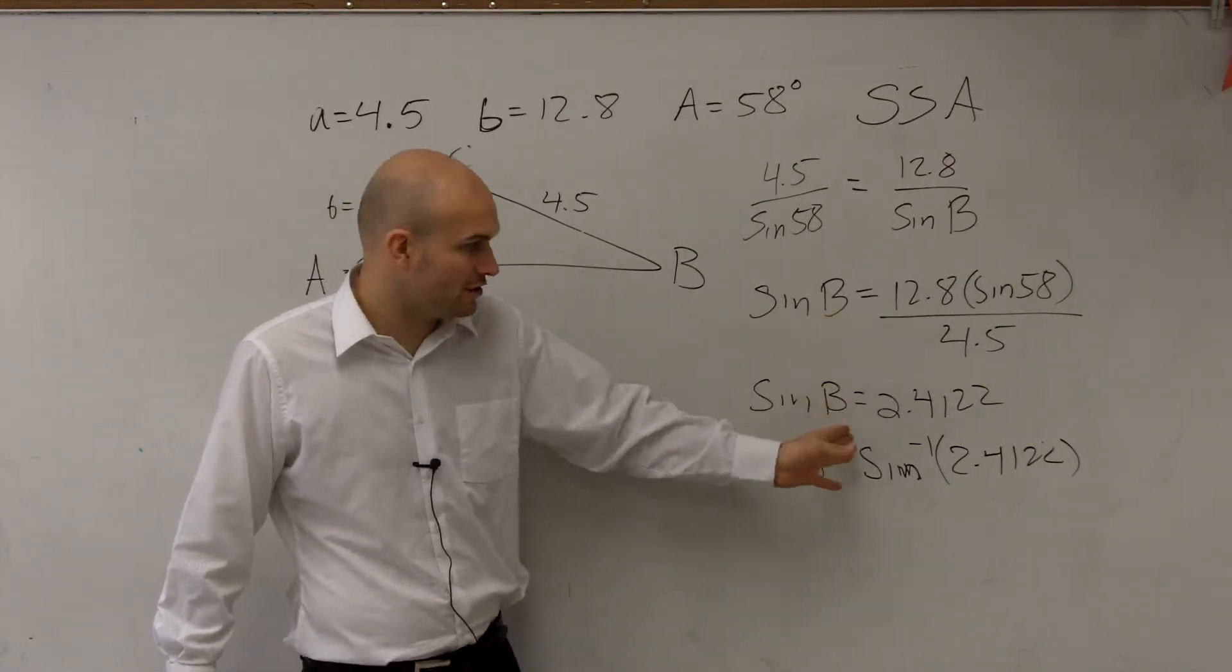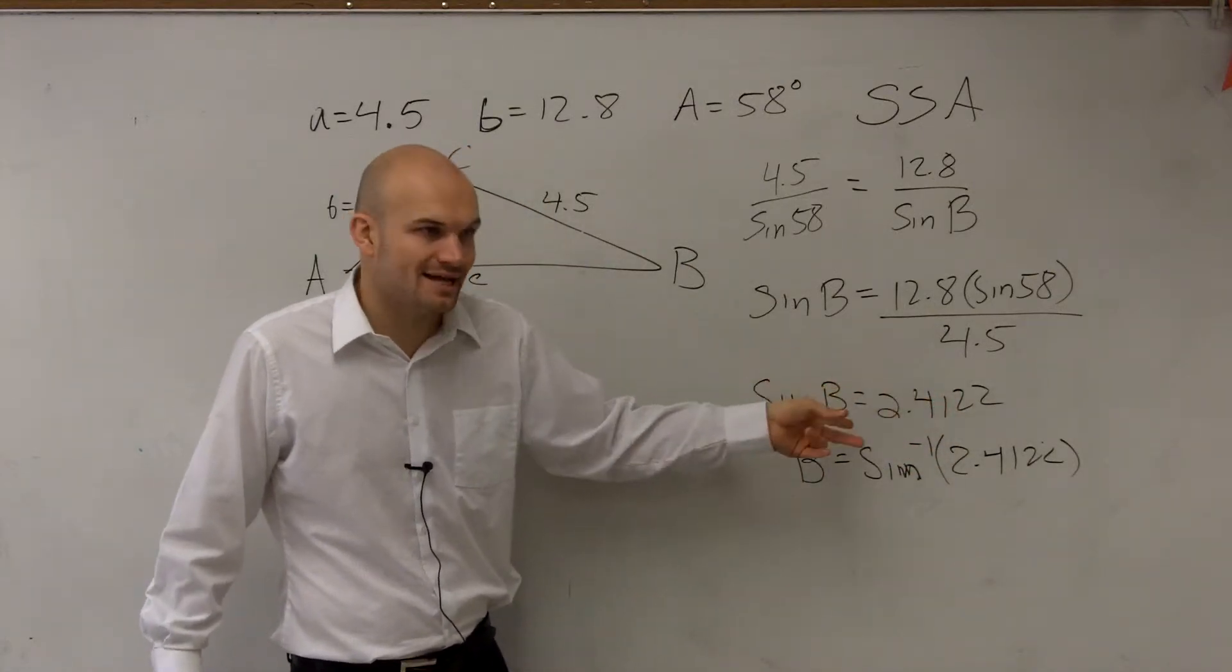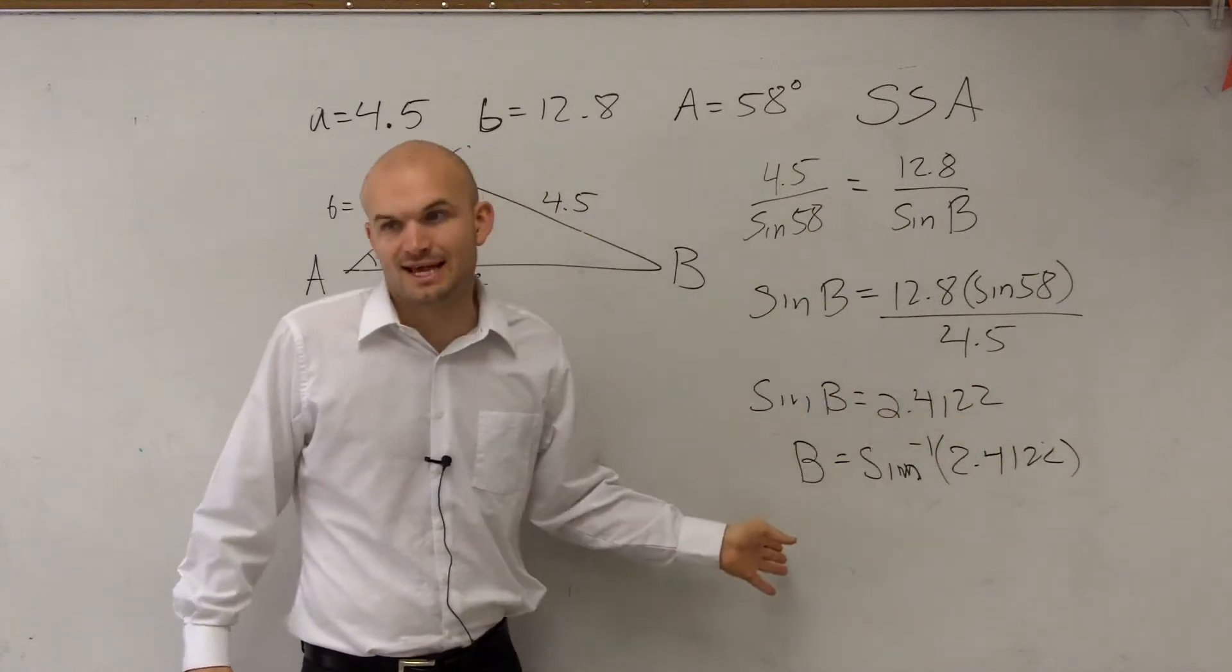So the sine of your angle equals your ratio, but we want to find what is the angle. So you have to do the inverse sine of your ratio to find the angle.